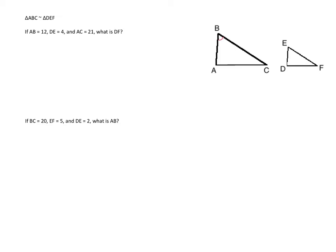So this angle right here, B, is the same as E, A is the same as D, and C is the same as F. So these triangles are similar.